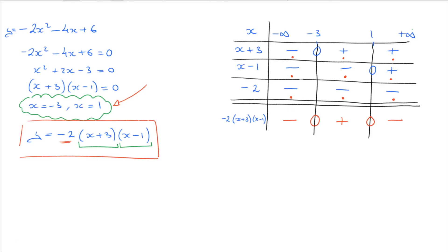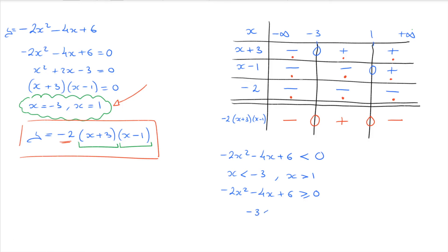This allows us to study the sign of this function. To solve negative 2x squared minus 4x plus 6 less than zero, we see from the sign table that the function is negative when x is less than negative 3 or x is greater than 1. To solve negative 2x squared minus 4x plus 6 greater than or equal to zero, the solution is all x values between negative 3 and 1 included. That's how we construct and use sign tables for quadratic functions. Thank you for watching, and I really hope that helps.